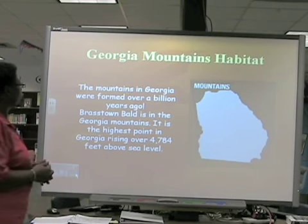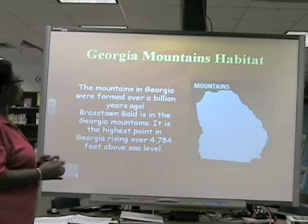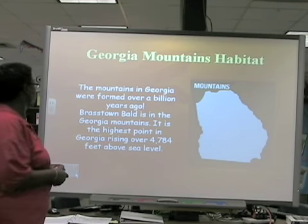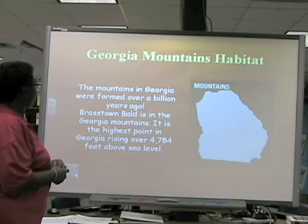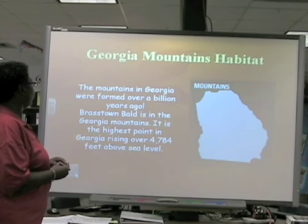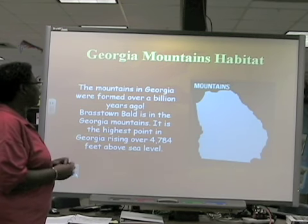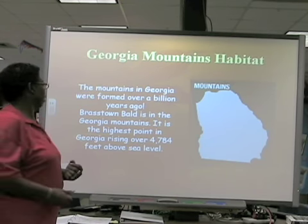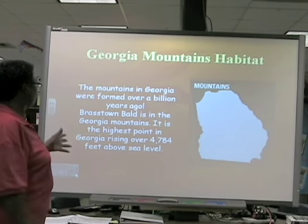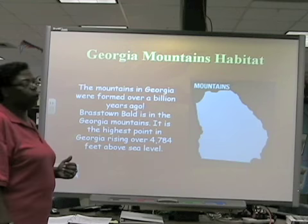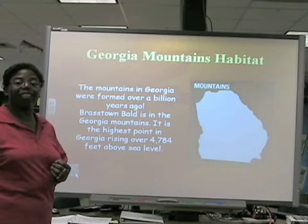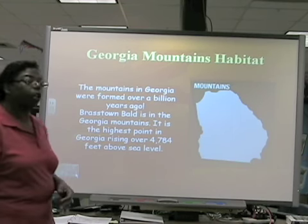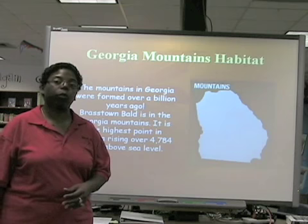The mountains in Georgia were formed over a billion years ago. Brasstown Bald is in the Georgia Mountains and it is the highest point in Georgia, rising over 4,784 feet above sea level.